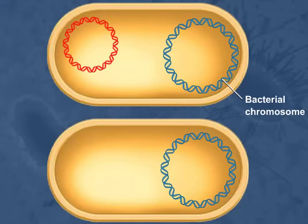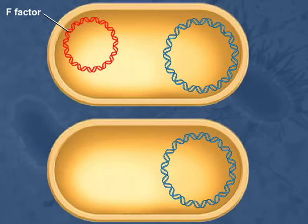A small DNA circle or plasmid called the F-factor is required for conjugation. The F-factor stands for fertility factor. Strains of bacteria containing the F-factor are called F-plus, and those without it are called F-minus.